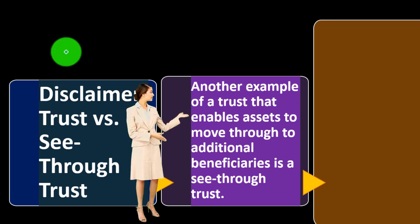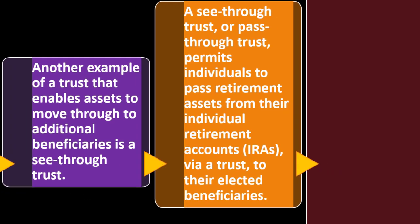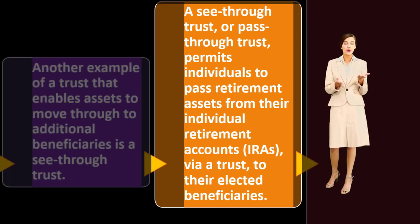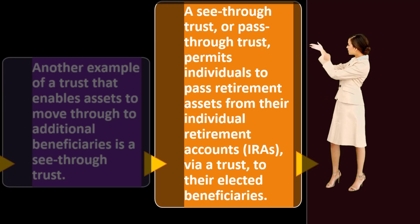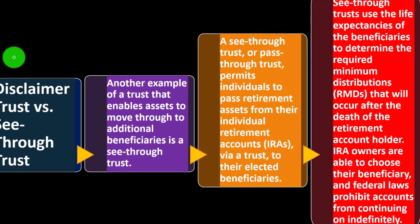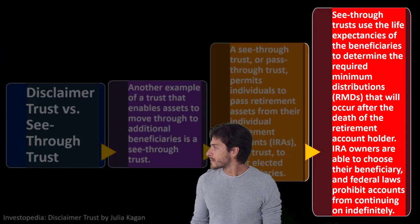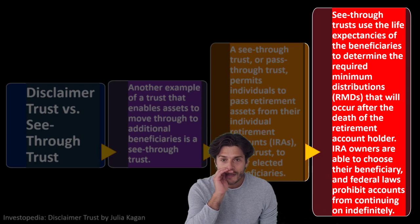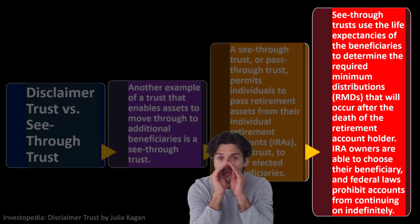Disclaimer trust versus see-through trust: another example of a trust that enables assets to move through to additional beneficiaries is a see-through trust. A see-through trust, or pass-through trust, permits individuals to pass retirement assets from their IRAs via a trust to their elected beneficiaries. See-through trusts use the life expectancies of the beneficiaries to determine the required minimum distributions, or RMDs, that will occur after the death of the retirement account holder.